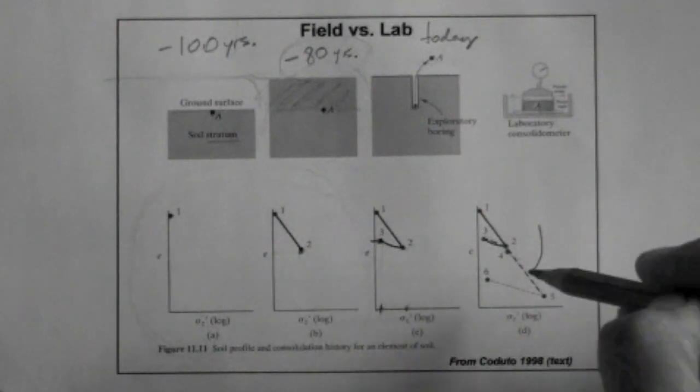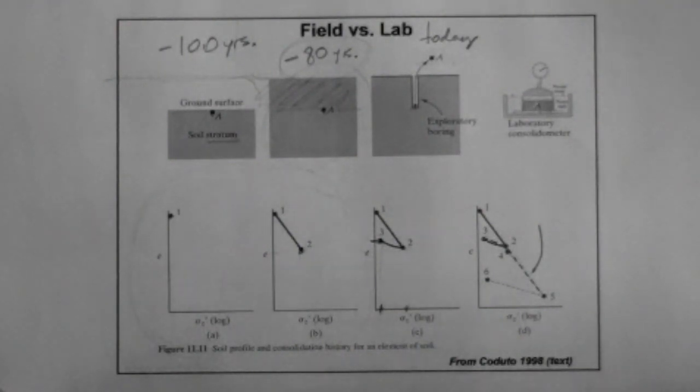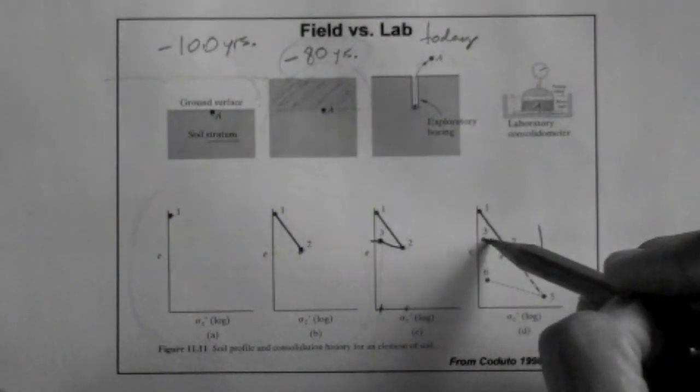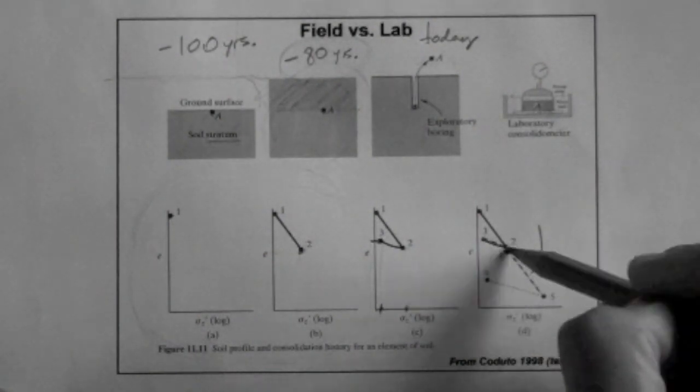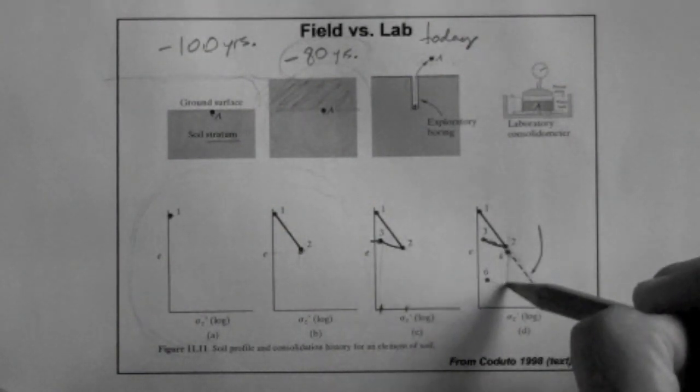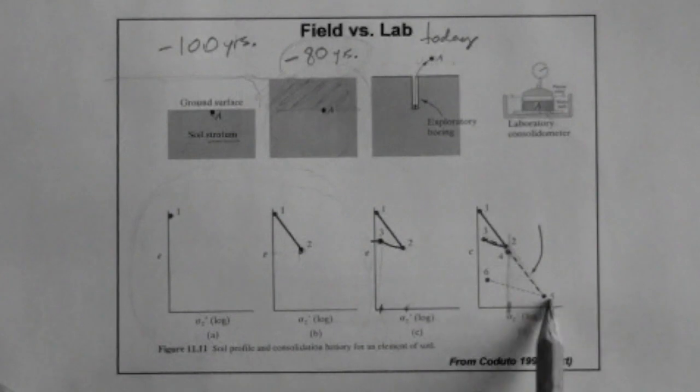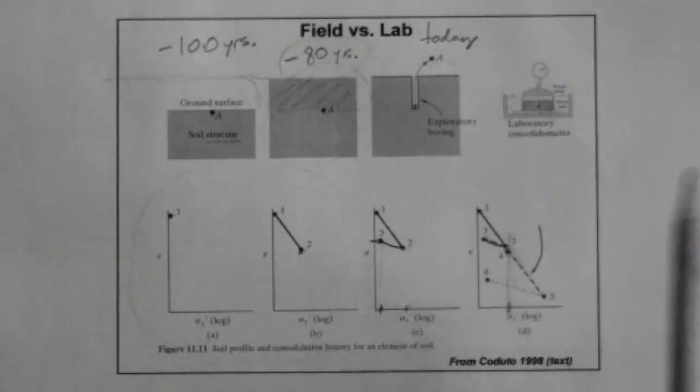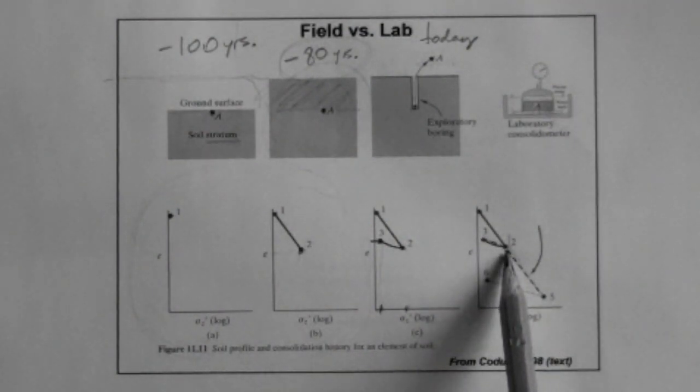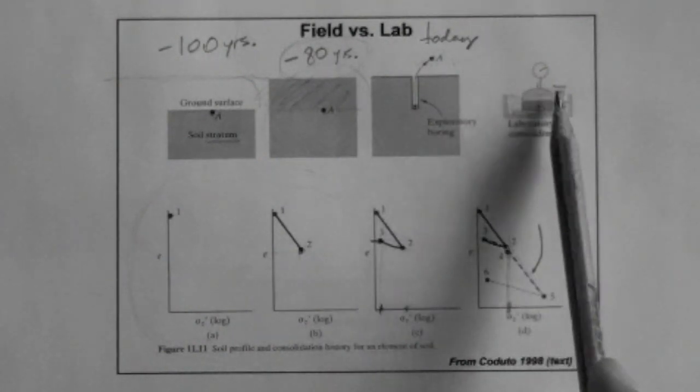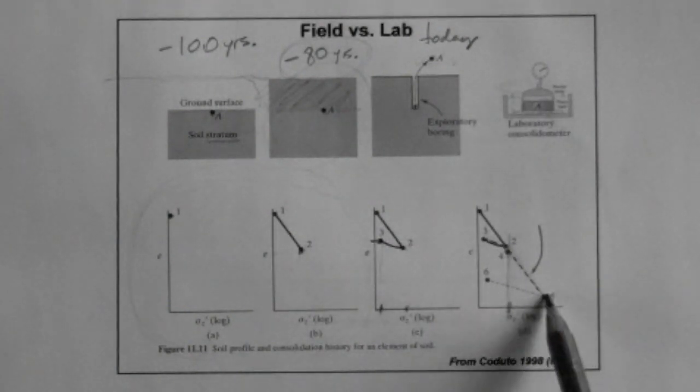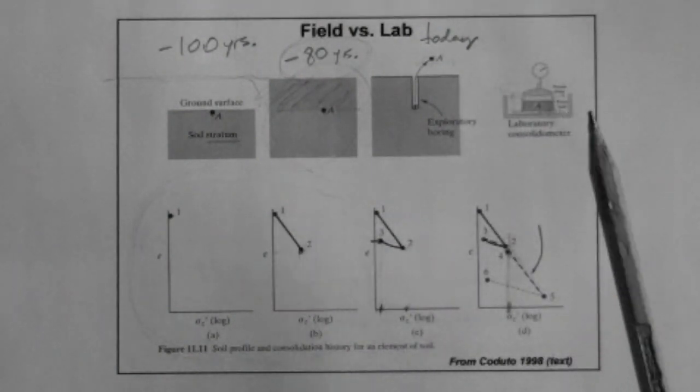Now, the important thing here is that, or the very interesting thing here is that that break between the first portion and the second portion, which occurs more or less at point four, coincides with point two in terms of stress. Point four, point four and five are points that are associated to loading during the test. So you can think of point four as the point associated to the loading with the first weight, and then point five, the loading associated with the second weight, et cetera.